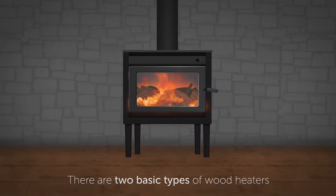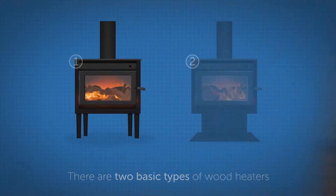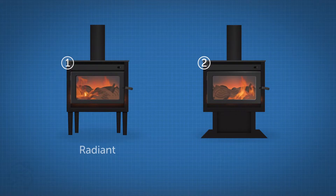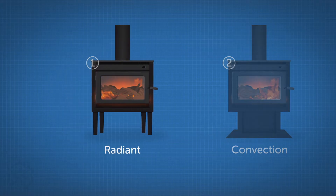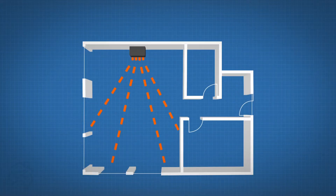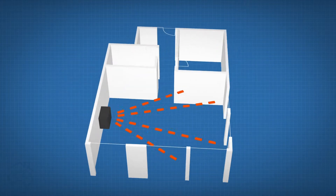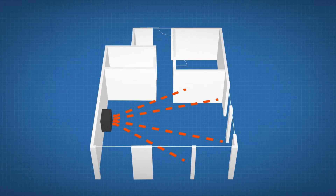There are two basic types of wood heaters in Australia: radiant and convection. Radiant heaters heat like the sun — they radiate heat in all directions and are excellent for large open areas.